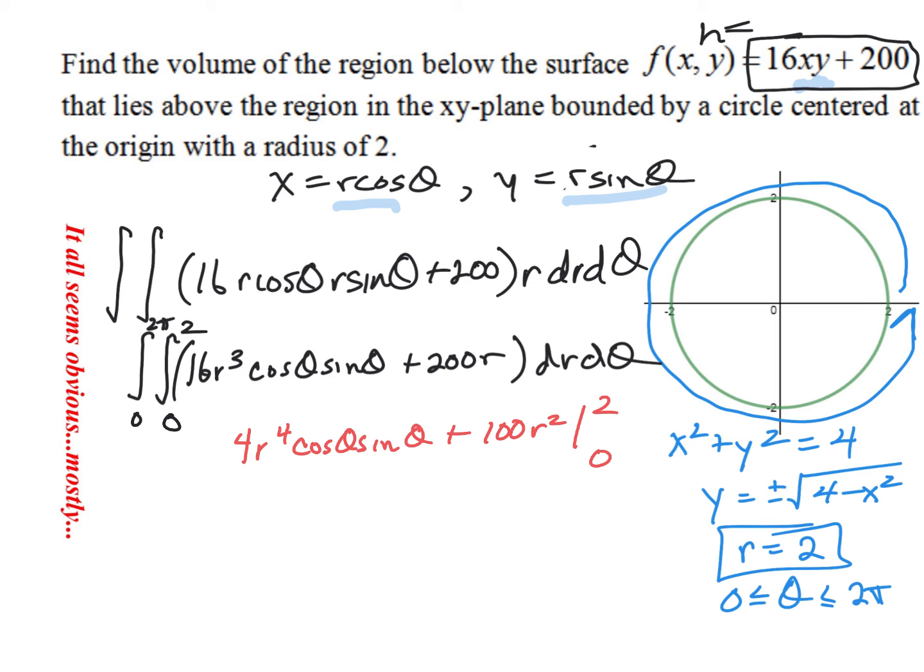All right, so we've got 64 cosine theta sine theta plus 400. Of course, we plug in 0, we get 0. So now, you know, this is what we end up with, and we could integrate this from 0 to 2 pi, you know, d theta.